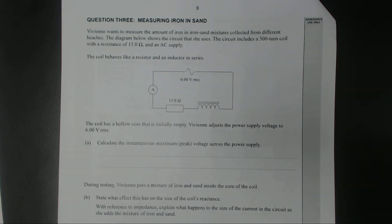The coil has a hollow core that is initially empty. Vivian adjusts the power supply to 6 volts RMS, root mean squared, which is the average voltage.